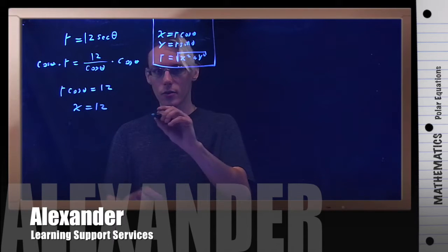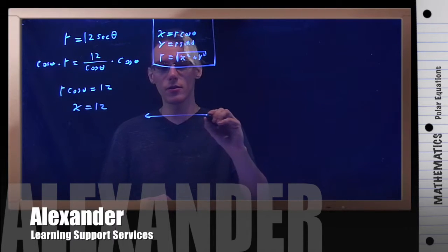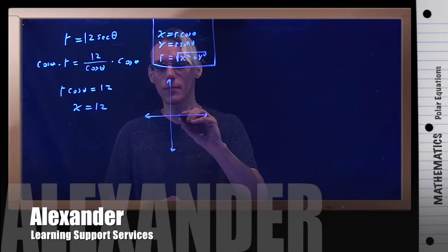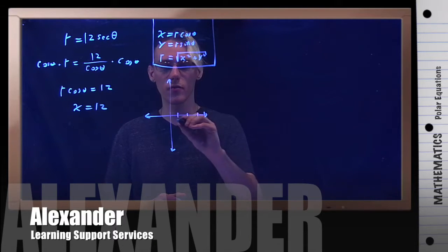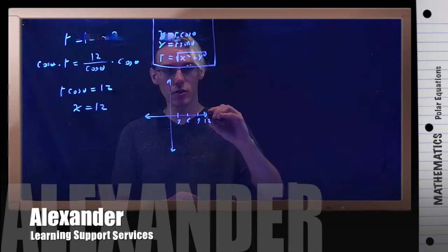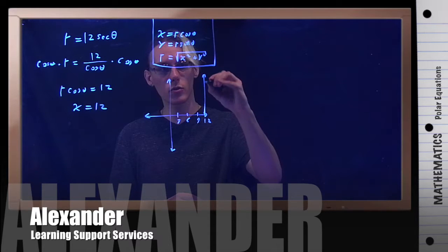So if I were to graph this, this is just a vertical line at the point. I'm going to tick by 3, so 3, 6, 9, 12. So this right here is just a vertical line at x equals 12.